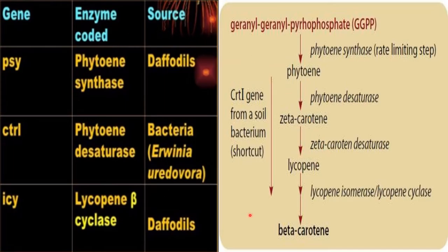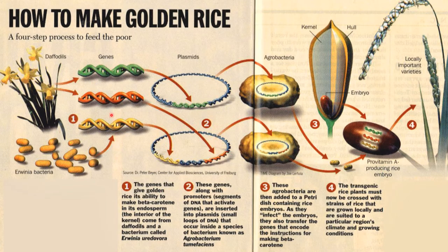For transformation, they took the phytoene synthase gene from daffodil and phytoene desaturase from Erwinia uredovora, which is a bacterium, and also lycopene beta-cyclase from daffodil. These genes were isolated from daffodil and Erwinia uredovora.